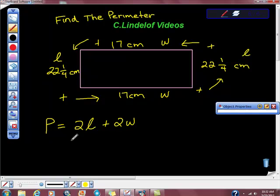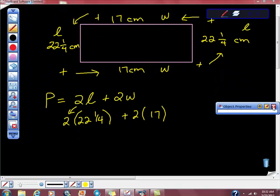So what is L in this case? 22 and one-fourth. So we get this two is this one. Is that all right? Mm-hmm. Times 22 and one-fourth. Holy macaroni. Plus two times 17. Two times 17 is 34. Good job.